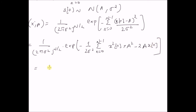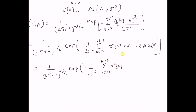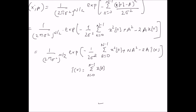Upon further simplification, we have 1 over (2 pi sigma squared) to the power N/2, times the exponential of minus 1 over 2 sigma squared times the summation from n equal to 0 to N minus 1 of x squared(n), plus N times a squared, minus 2 times a times T(x), where T(x) is the sum from n equal to 0 to N minus 1 of x(n) — that is the statistic for estimating the parameter a.